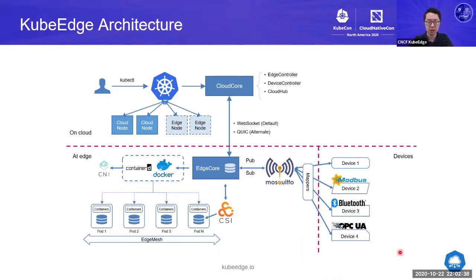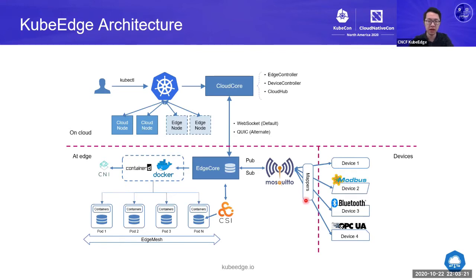For devices, KubeEdge relies on MQTT, because MQTT is more popular than other industrial protocols. Device developers can develop a protocol converter to integrate with the device using its actual device protocol, while converting all message content to MQTT. For application developers, it's much easier — they just need to deal with communication through MQTT instead of all the other actual device protocols.